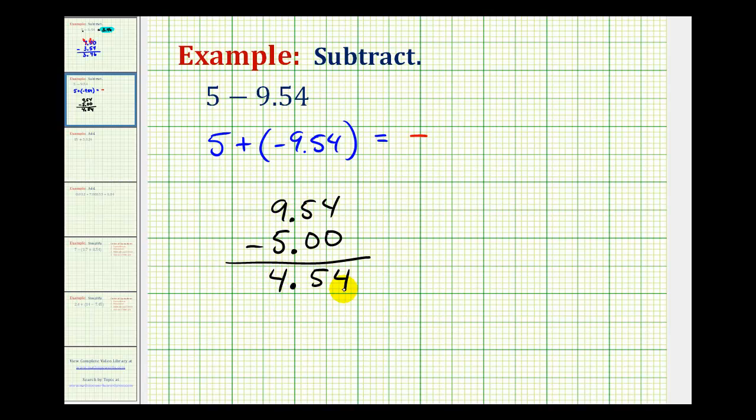So this difference is 4.54, but again we know this sum has to be negative, so it's actually negative 4.54.